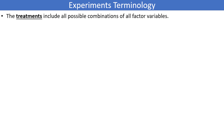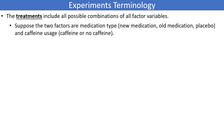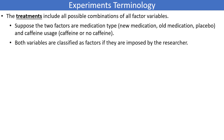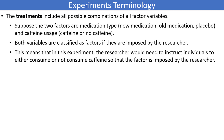The treatments include all possible combinations of all factor variables. Remember that a factor is something specifically imposed or controlled for by the researcher. If there are multiple factors, that can create numerous treatment combinations. Suppose in an experiment the two factors are medication type and caffeine usage. We would classify both variables as factors only if they are imposed by the researcher. This means the researcher would need to instruct individuals to either consume or not consume caffeine in the study in order for caffeine usage to be a factor. If participants can self-select whether or not they consume caffeine, then we have lost the randomization aspect and can no longer consider caffeine usage a factor.